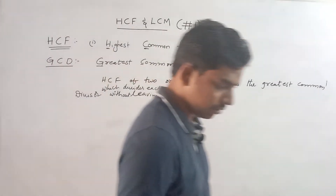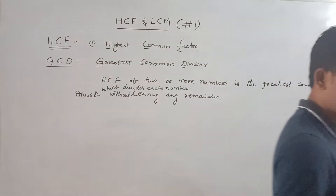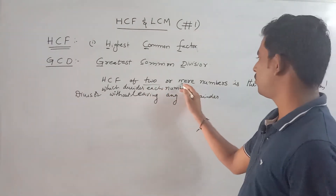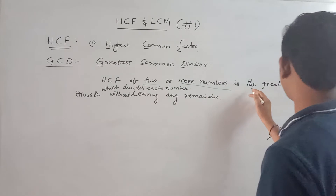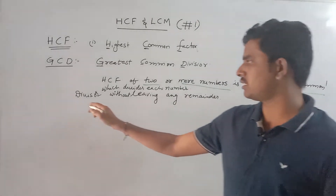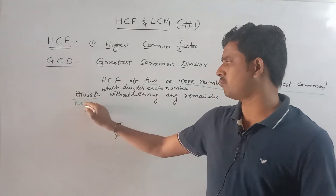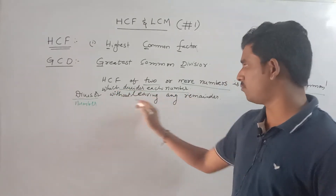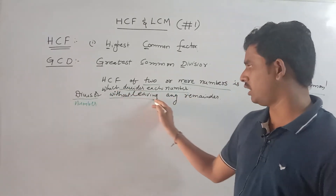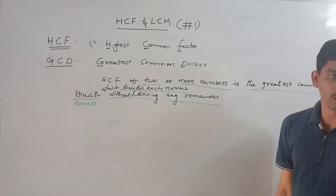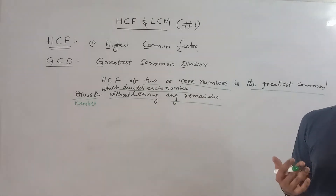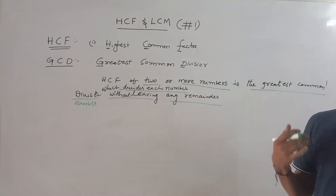The HCF of 2 or more numbers is the greatest common divisor — the number which divides each number without leaving any remainder. If you divide a number and the remainder is 0, that means it divides evenly.